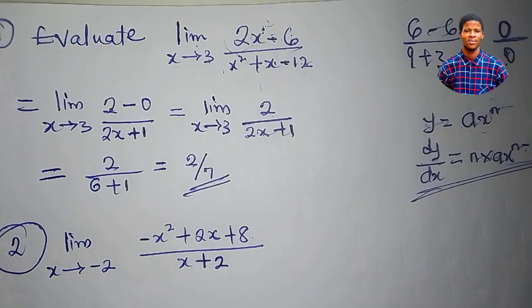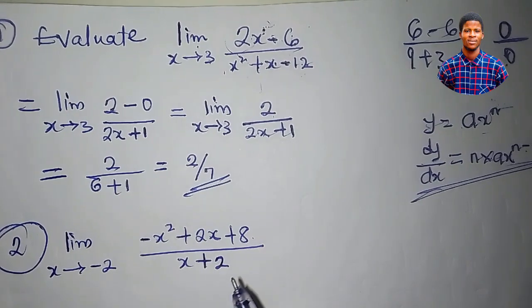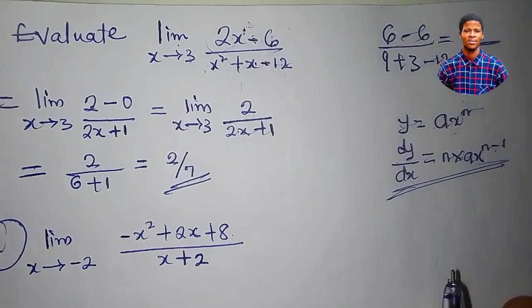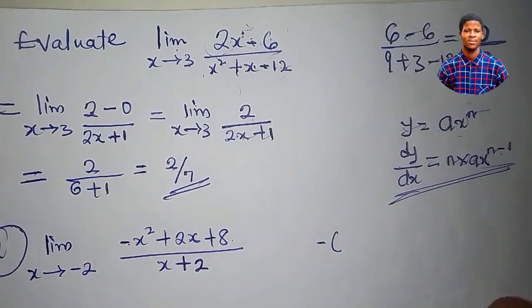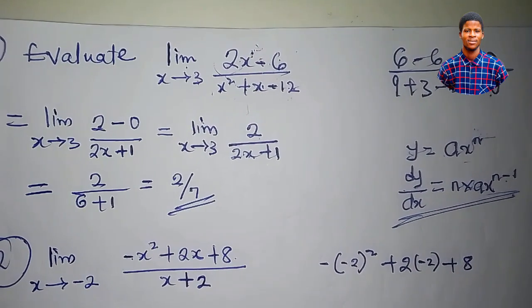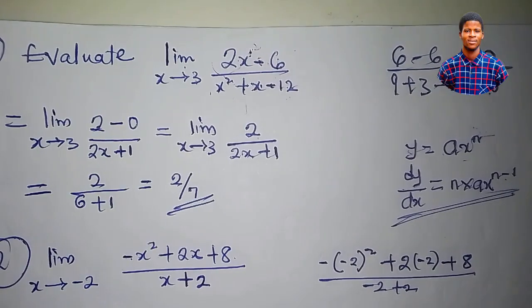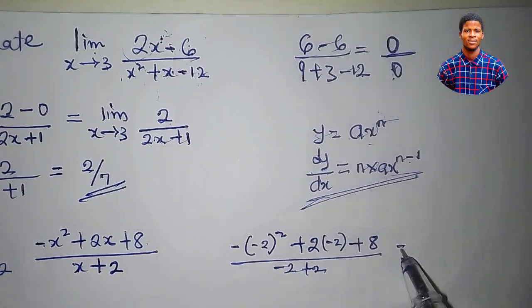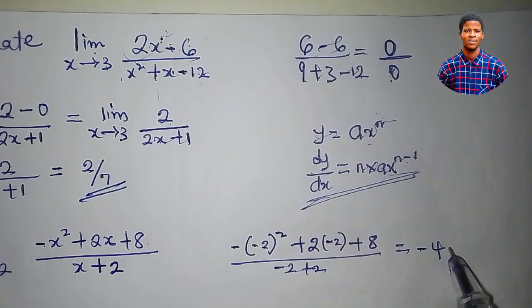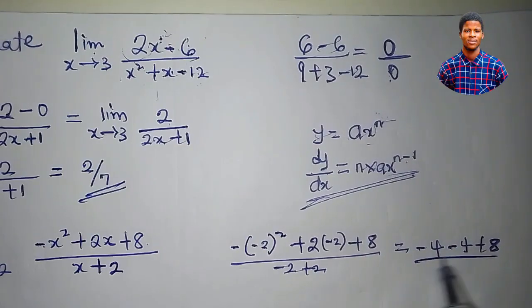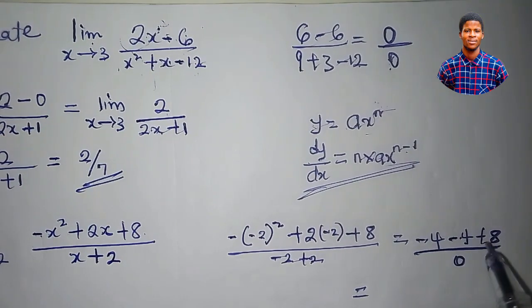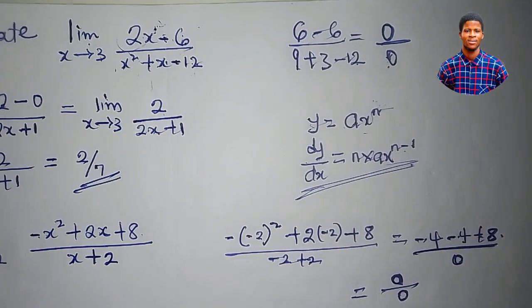What will be the limit as x approaches minus 2 of minus x squared plus 2x plus 8 divided by x plus 2? Direct substitution — plugging in minus 2 — gives minus (minus 2 squared) plus 2 times minus 2 plus 8, all over minus 2 plus 2. That's minus 4 minus 4 plus 8 over 0, which is 0 over 0. We are getting an indeterminate form again, so we have to apply L'Hôpital's rule.